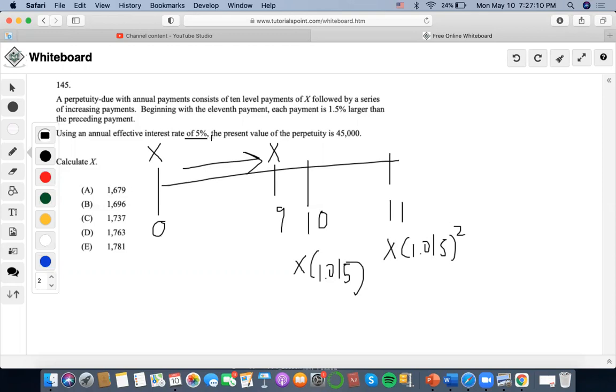Now, using this effective rate, the present value of the perpetuity is 45,000. Calculate X. So the first thing that we could do is we could find the perpetuity of this. So payments of X, and you do, of 10, 5%.